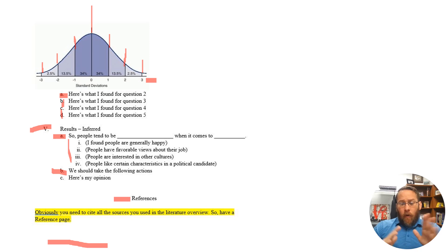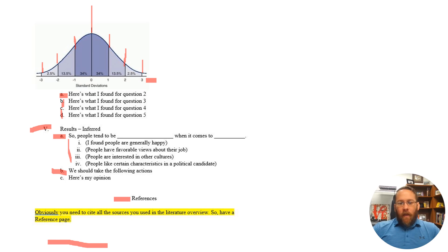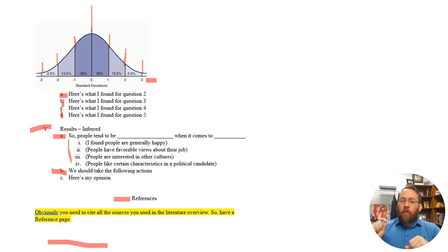Standard deviations are small when using small numbers like one to five — typically decimal values like 0.3 or 0.4. If you use large numbers, like people's weight ranging from 120 to 220 pounds, then yes, the standard deviation could be seven, eight, or nine. For a one-to-five scale, most standard deviations will be decimal points, maybe up to 1, but not much larger.